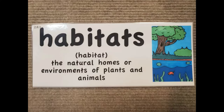We have learned about a lot of different animals that live in these different types of habitats. Some animals, like deer, can live in many different types of habitats. But other animals need a specific type of habitat to survive. For example, penguins need to live in a tundra habitat. Think about some of the animals you've learned about and take a minute to figure out what kind of habitat that animal usually lives in.